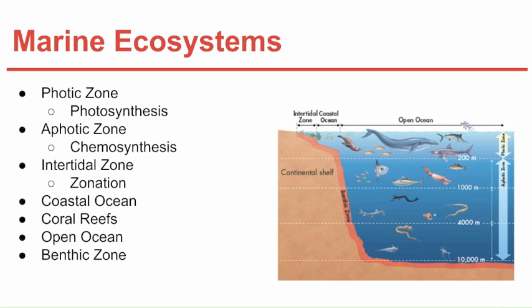The coastal ocean extends from the low tide mark to the edge of the continental shelf. The most common ecosystem there is kelp forests, which are made of brown alga — an extremely fast-growing form of seaweed. Smaller fish, usually found in schools, are common here.